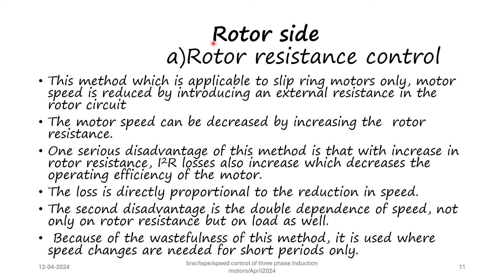Speed control of three phase induction motors from the rotor side involves two methods: rotor resistance control and slip power recovery schemes. This rotor side control is possible only for slip ring induction motors, not squirrel cage induction motors. In rotor resistance control, an external resistance is introduced in the rotor circuit to change the motor speed. One serious disadvantage is that with increased rotor resistance, I²R losses also increase, decreasing operating efficiency. The losses are directly proportional to the reduction in speed. Additionally, the speed depends not only on rotor resistance but also on load.